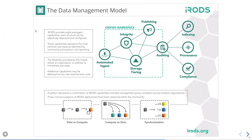Ultimately, iRODS is described through a data management model. Starting from the bottom — core competencies, then policy, then capabilities (automated ingest, storage tiering, auditing, indexing, data integrity, publication), then deployment patterns — all of that comes together in the iRODS data management model. We can pick and choose capabilities for deployment or proof of concept, and decide on patterns: HPC context, migrating data from aging file systems to cloud, containerizing applications for workflows, or some combination.